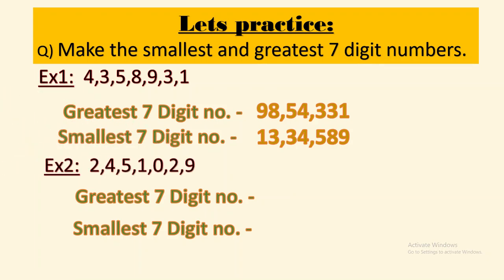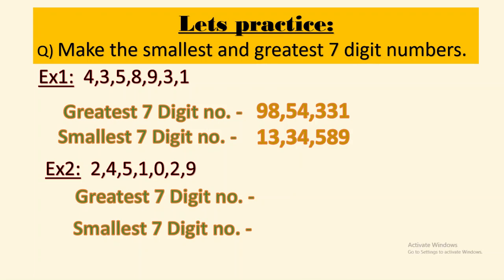Here the seven digits are 2, 4, 5, 1, 0, 2, and 9. We have to be careful while forming the smallest seven digit number because there is a zero. We cannot place zero at the extreme left position — if we do, it becomes a six digit number. So we place zero at the second position and put the next smallest digit, which is 1, at the first place.